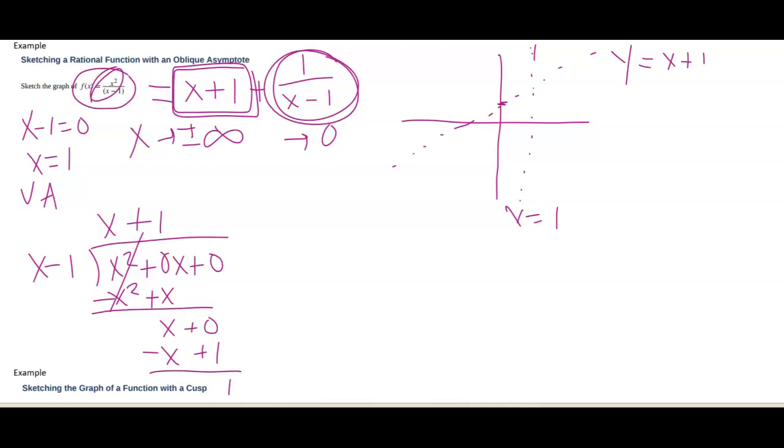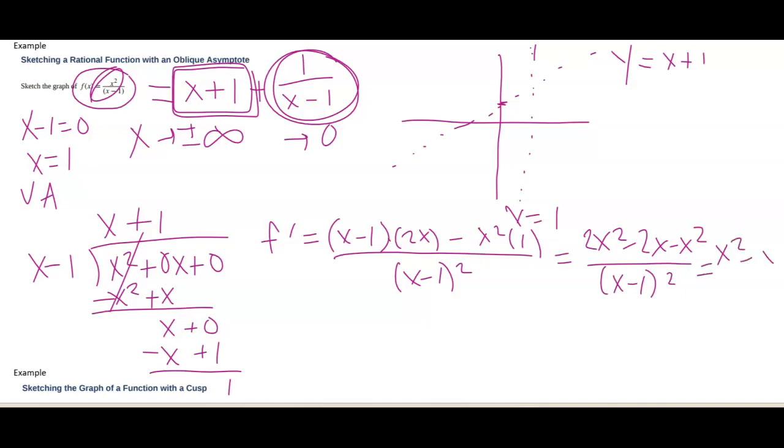All right, let's go ahead and find the derivative and do all the things we've been doing with curve sketching. So f prime is low d high minus high d low all over low squared. I end up getting 2x squared minus 2x minus x squared all over this denominator. And that ends up giving me x squared minus 2x all over x minus 1 squared.